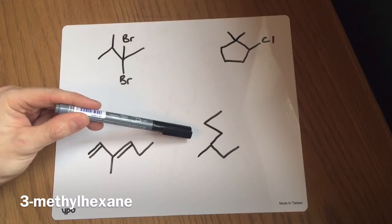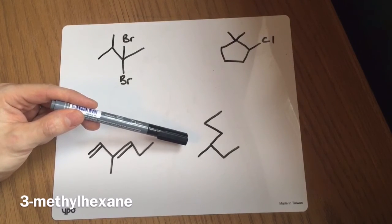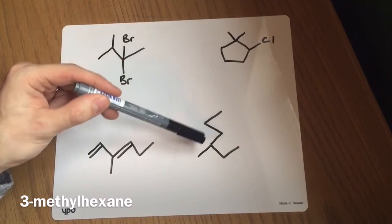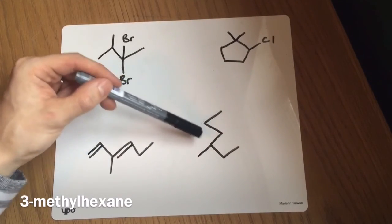And a real tricky one over here in the bottom right, this is 3-methylhexane. So hopefully you realize that this was the 6-carbon chain, which was the longest part, and that this was the side group, as opposed to thinking that was the straight chain and that this was a side group.